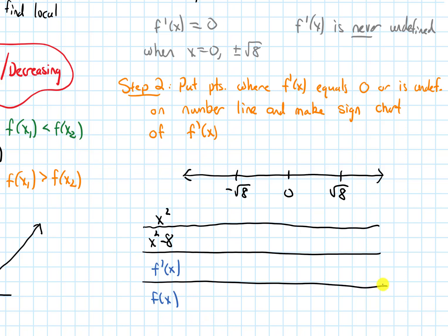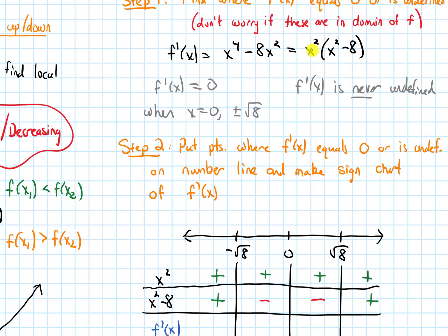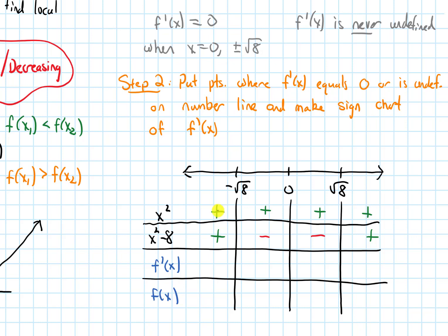Making a table on each side of these cut points. For x squared, no matter what number I plug in, the squared guarantees I'm never going to get a negative number, so this is always positive. For x squared minus 8: if I plug in a number bigger than root 8 or less than negative root 8, it's positive; if I plug in a number between negative root 8 and positive root 8, I get negative. So the derivative — those two factors multiplied — gives: positive times positive is positive, positive times negative is negative, positive times negative is negative, and positive times positive is positive.